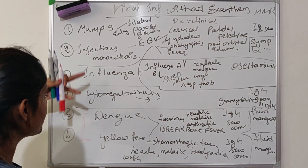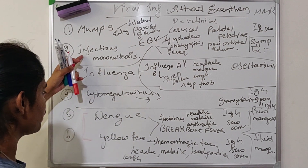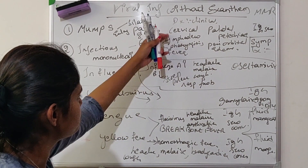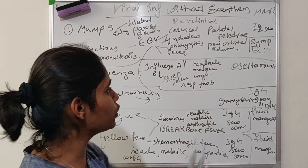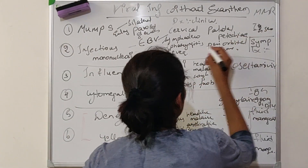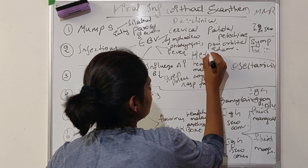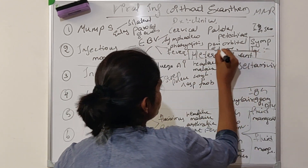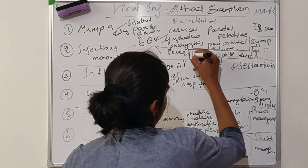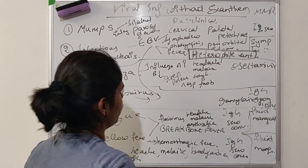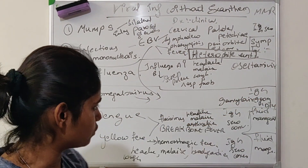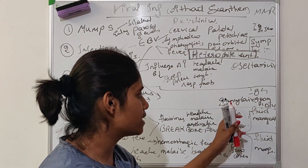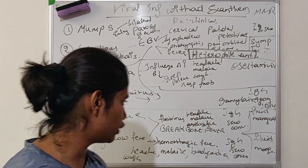In summary, for infectious mononucleosis caused by Epstein-Barr virus and cytomegalovirus, both share the same symptoms. For diagnosis of infectious mononucleosis, you look for a heterophile antibody — this test is called the monospot test. For cytomegalovirus, you see IgG seroconversion. Treatment for infectious mononucleosis is symptomatic, and for cytomegalovirus, Ganciclovir 900 mg twice a day for 14 days.